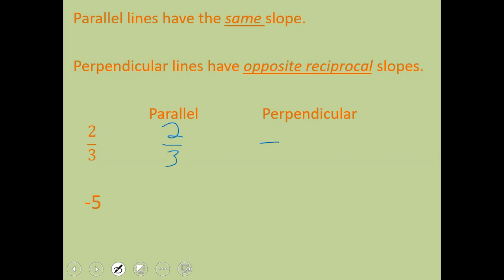Looking at negative 5, parallel again is just the exact same slope. So it stays negative 5. Perpendicular means it's the opposite. So we would go to positive. Reciprocal means you would flip your fraction. We know that 5 is understood to be 5 over 1. So the reciprocal for that would be a 1 fifth. So simple as that.